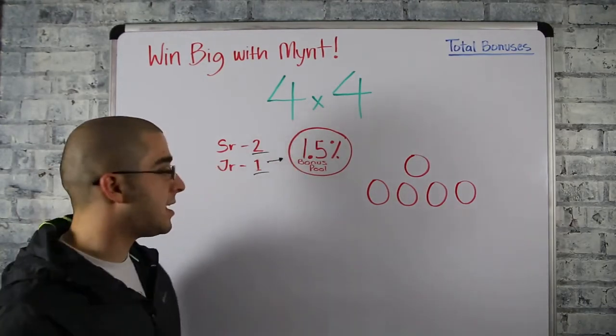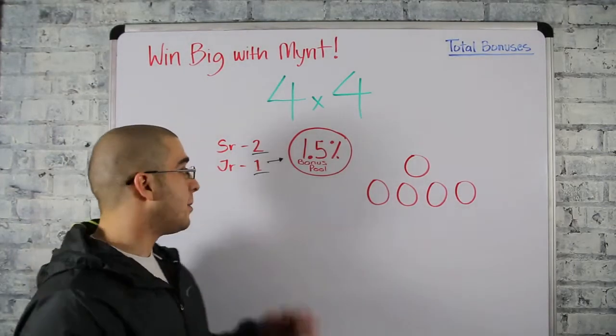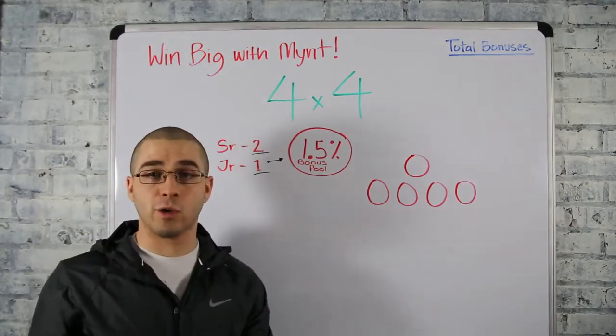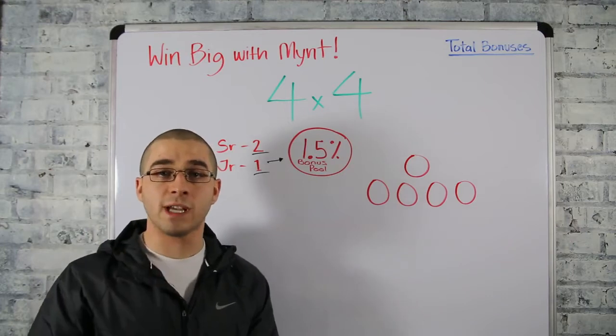Now our bonus pool is basically, we're backed by a billion dollar company which you might know already. So our bonus pool is our parent company's volume for North America. All their sales, all their revenue for North America, they take 1.5% of it and put it in a bonus pool.